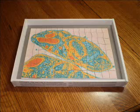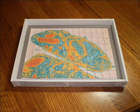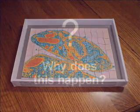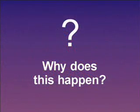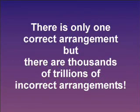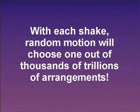Now in theory, it is possible that if we shake the box long enough, the pieces will once again form the picture. But the chances of this happening become very, very small. The answer has to do with the number of possible positions that each piece can be in. Each piece has to be in the correct position for us to see the completed picture. There is only one correct arrangement of the puzzle. However, there are literally thousands of trillions of incorrect arrangements of the pieces. Each time we shake the box, there are trillions of incorrect arrangements possible, but only one correct assembled form.